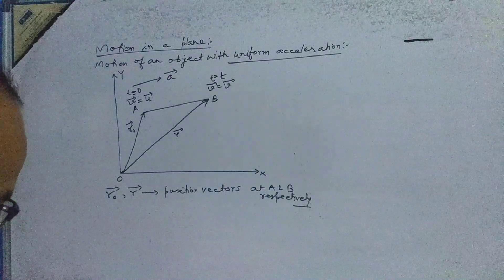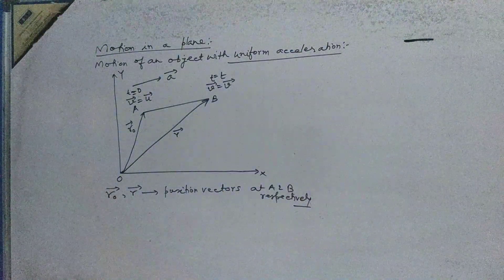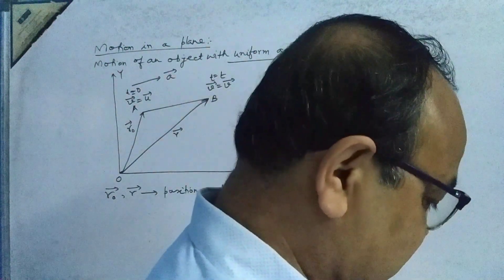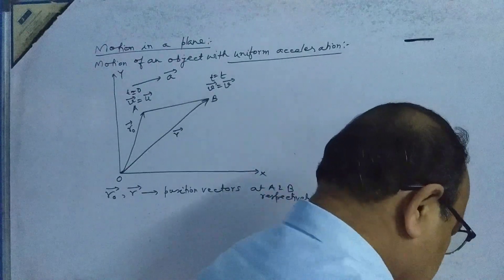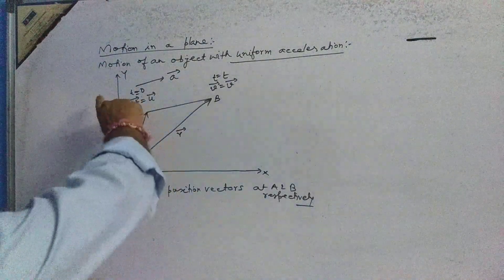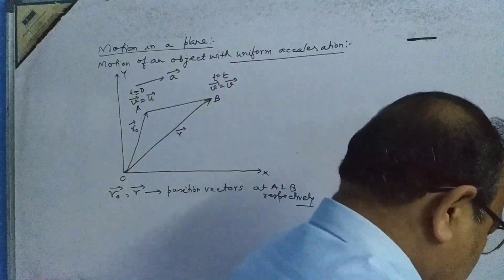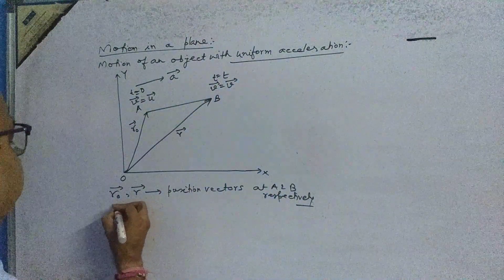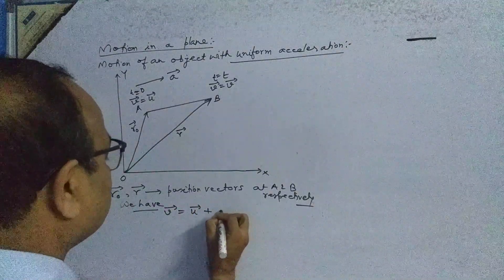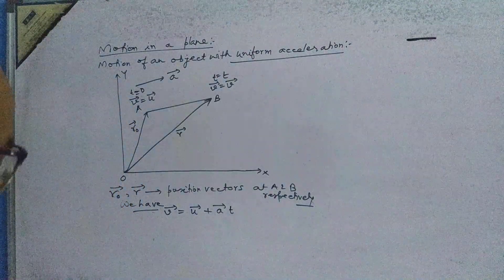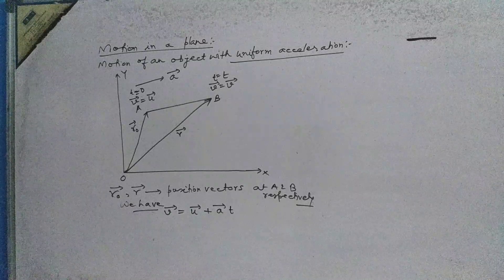Suppose the object is moving with uniform acceleration. At that stage, the initial velocity is u vector and the final velocity is v vector. So what we can say: v vector is equal to u vector plus a vector into t.